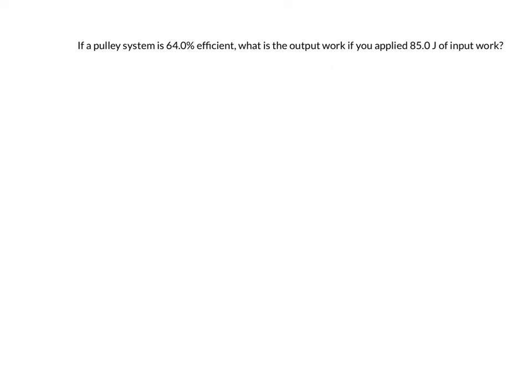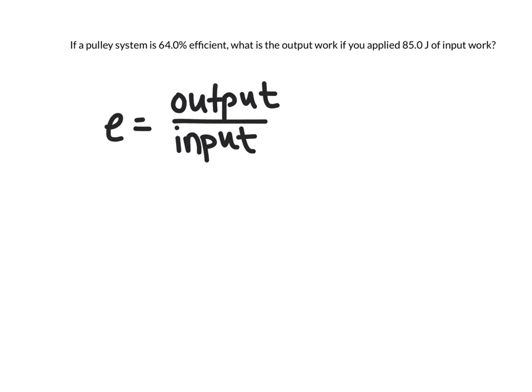Let's look at one more. In this problem, we have a pulley system that's 64% efficient. And we want to calculate the output work if we apply 85 joules of input. So once again, let's start with our equation. In this case, we're going to be solving for the output work. And we're given the efficiency, and it's 64% efficient. When I write this into the equation, remember that's going to go here where that E is, I'm going to write it as the decimal form, just like we would get when we do the calculation. So it's 0.64 to convert a percent into a decimal, just divide that by 100.